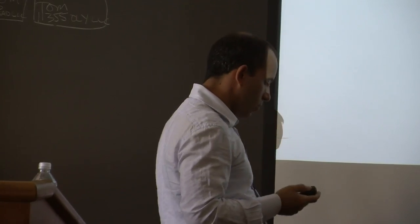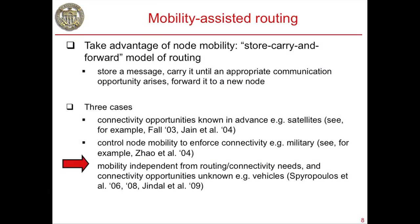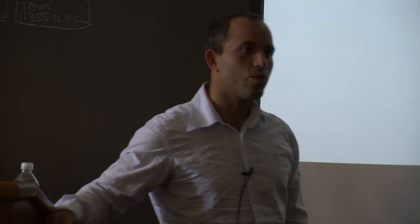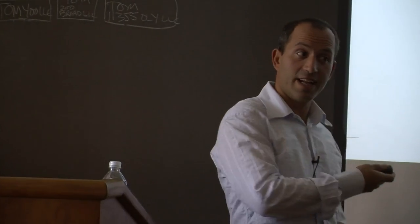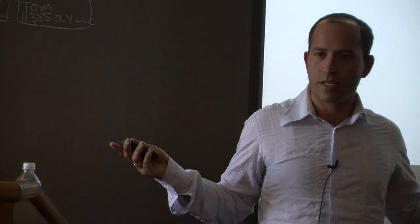This is where mobility-assisted routing comes in, well-suited for vehicular networks which are by definition mobile. The idea is to store packets for some time, carry them as you move, then forward them — reminiscent of the post office. It was surprising to the networking community ten years ago that this makes sense in some applications. It involves larger delays, but if that's your only option, or if you're not willing to pay for full coverage, even larger delays are acceptable.